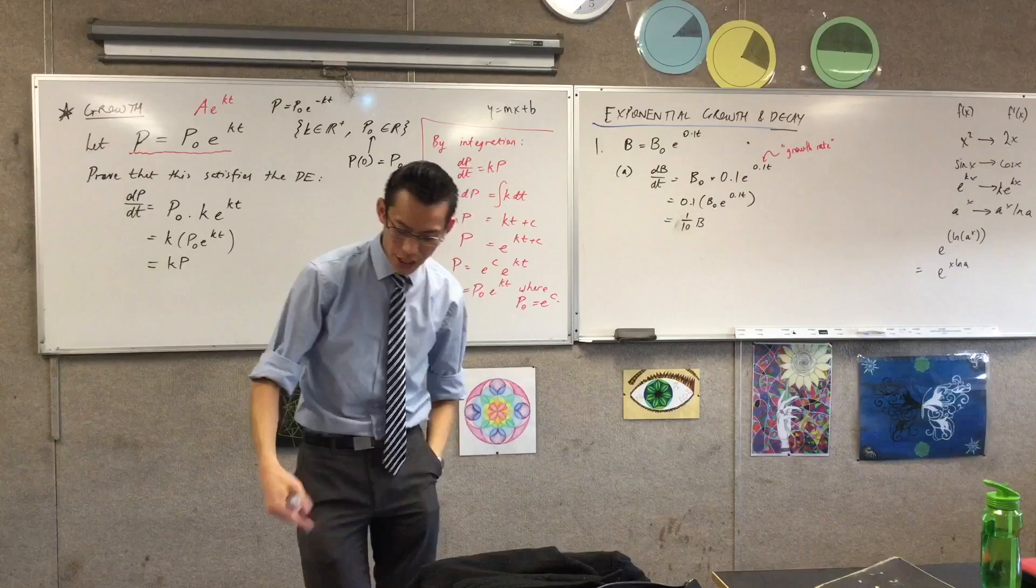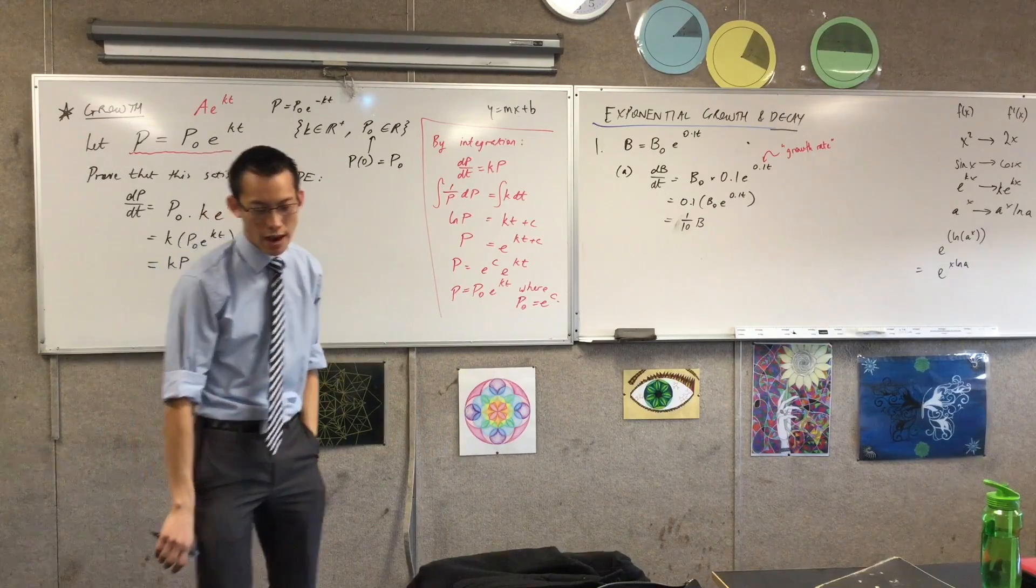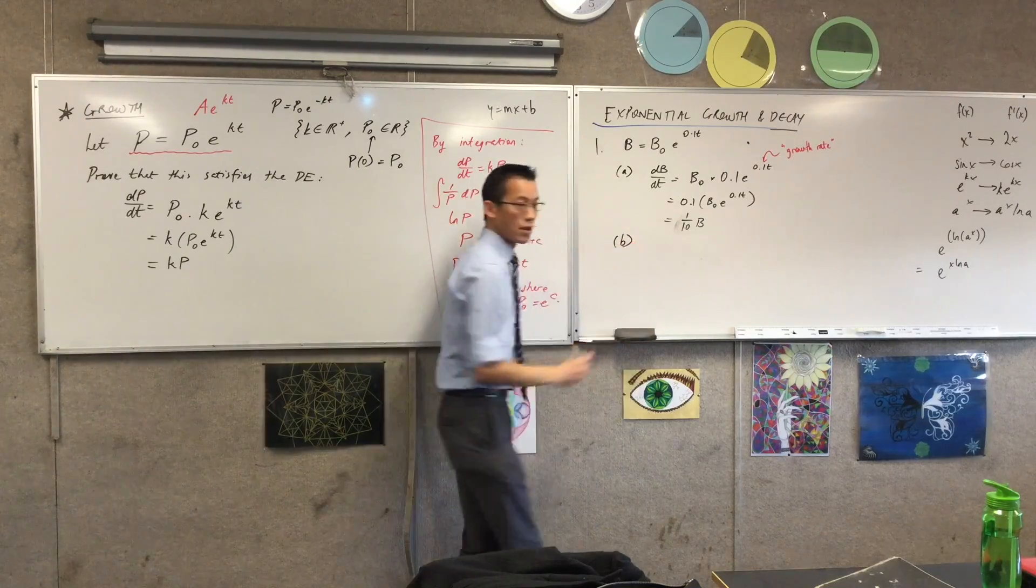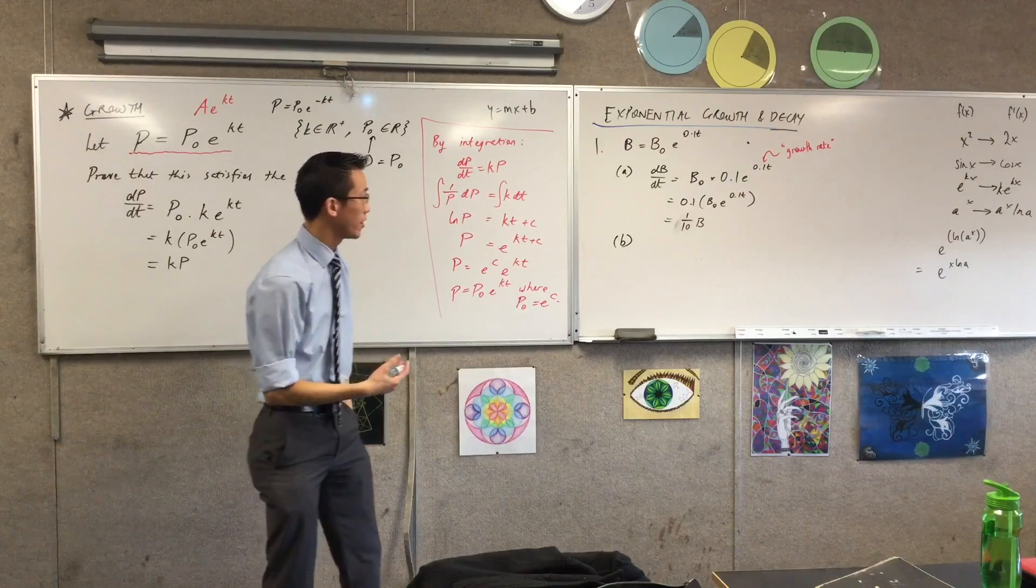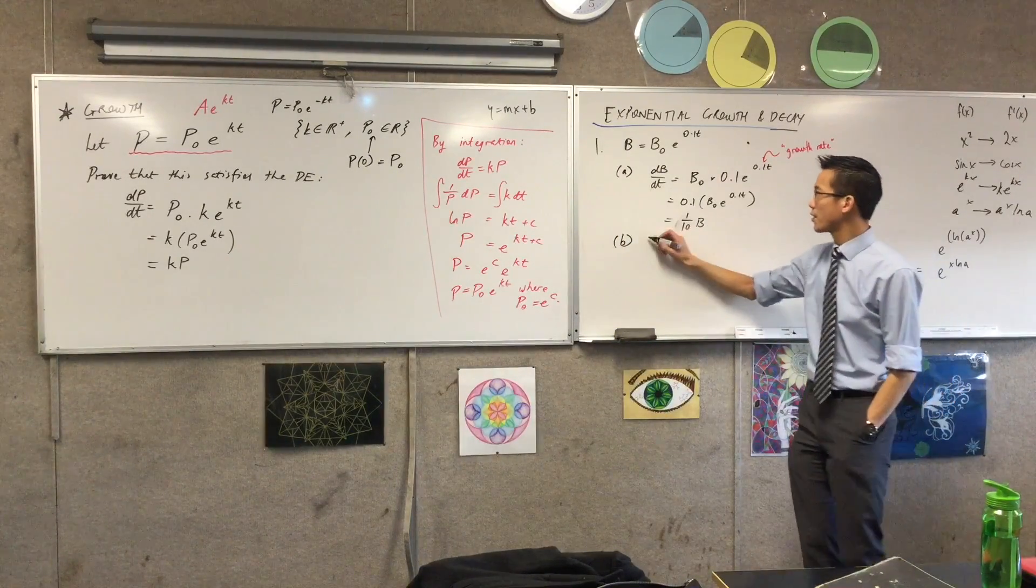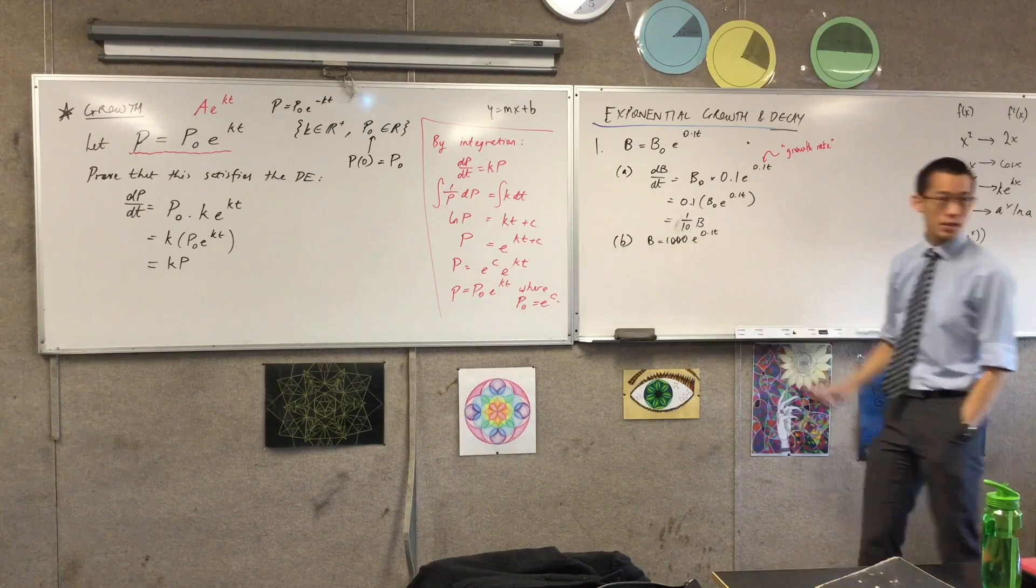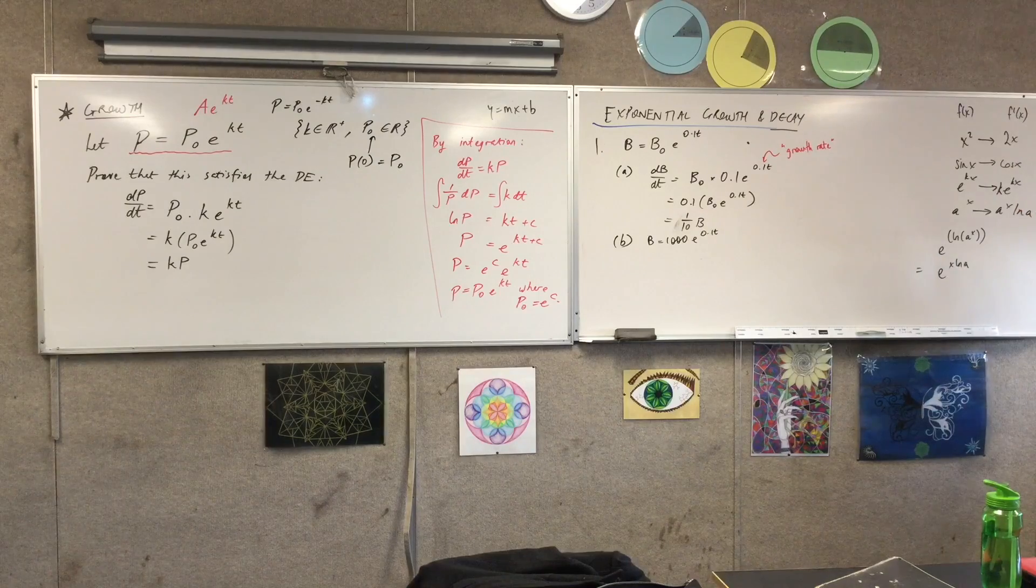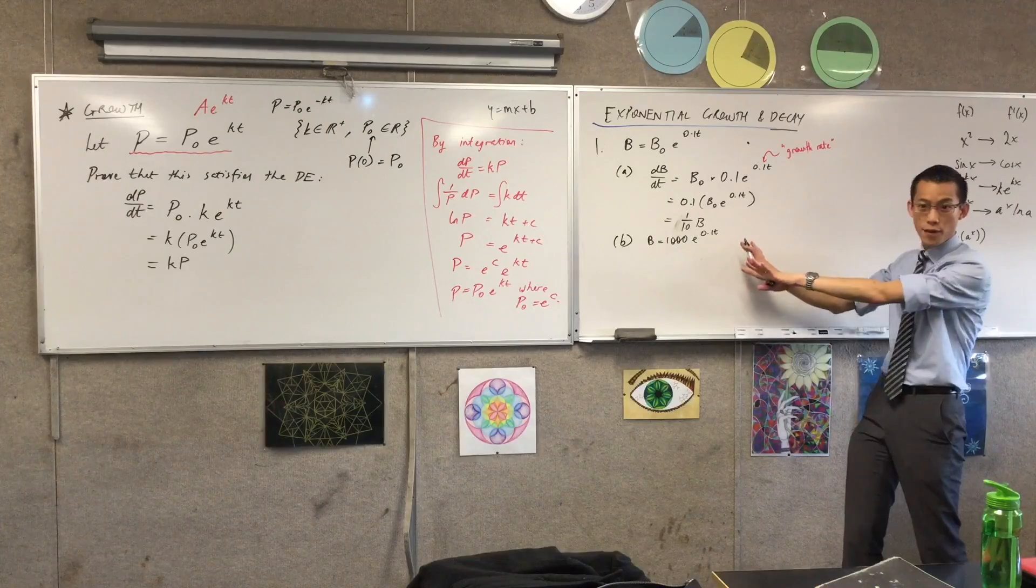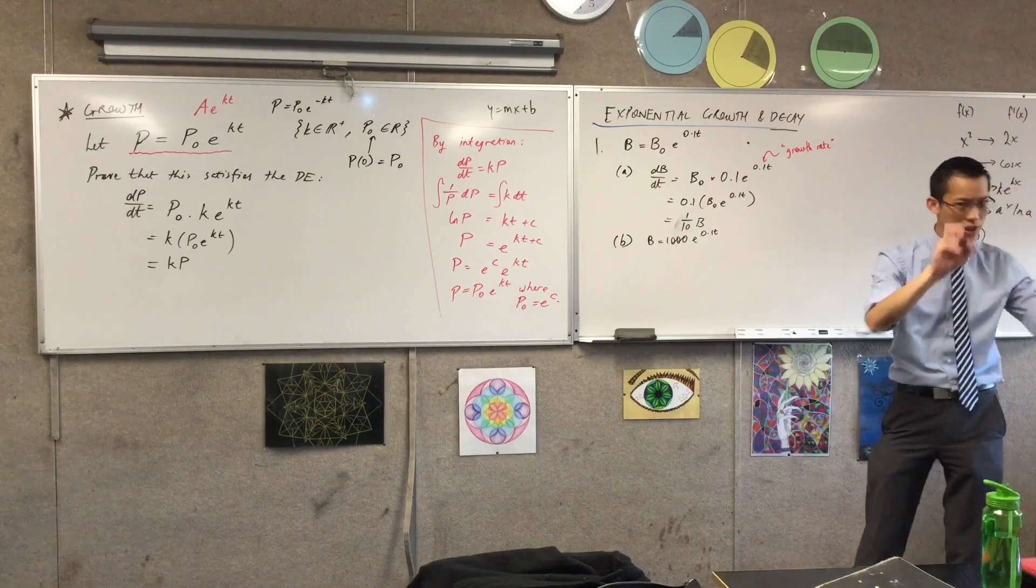All right, Part B, it says, initially the number of bacteria is estimated to be 1,000. Find how many bacteria there are after three hours, and it's to the nearest whole number, okay? So all we need to do at this point is to say, well, B0 is the initial condition, right? So I'm going to say B equals 1,000 times this, okay? And do we know t? I also know t, so I'm just going to lay that there first though, because I'm going to use this equation later on, now that I've got the equation for B.